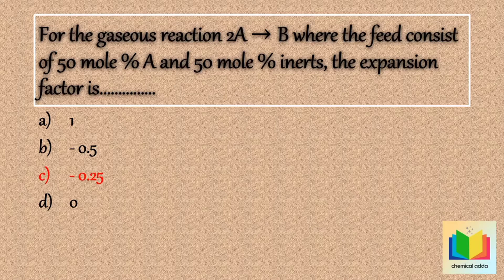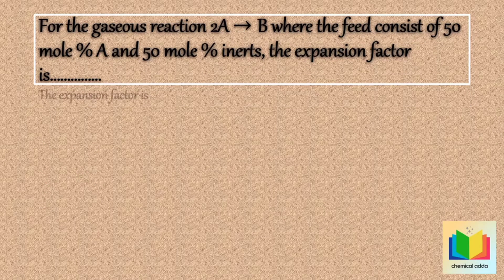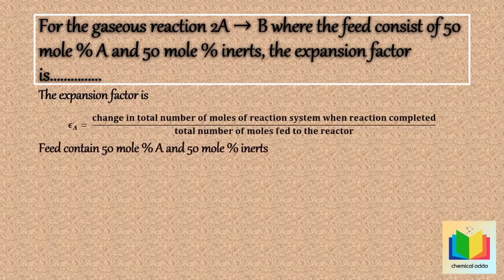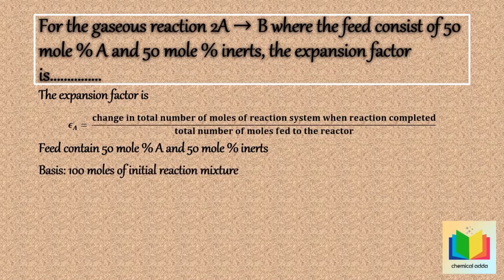The answer is option C: −0.25. The formula for expansion factor is: εA = (change in total moles when reaction is complete) / (total moles fed to reactor). Given 50 mole percent A and 50 mole percent inerts, taking a basis of 100 moles of initial reaction mixture, at no conversion we have 50 moles A and 50 moles inerts, giving 100 total moles.